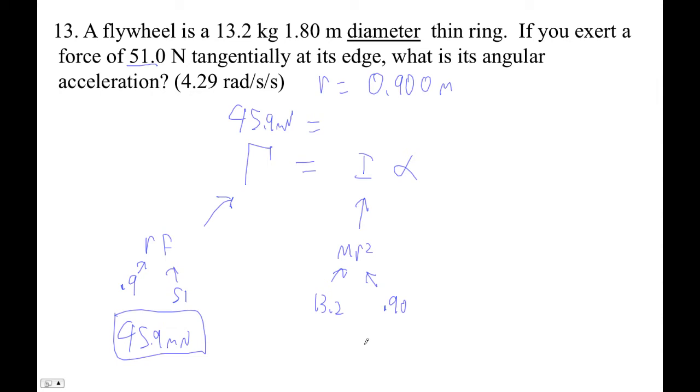13.2 times 0.9 squared is 10.692, and then times alpha. Now we're all set. Let's figure out alpha. It's going to be 45.9 divided by this guy... 4.29. Oh, that's awesome.